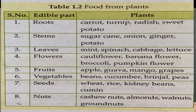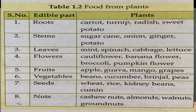The last from your chart is nuts — that is cashew nuts and almonds. These are the parts called nuts. These are the edible parts which we get from the plants.